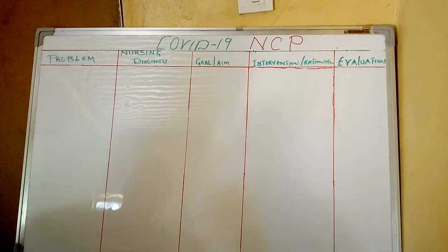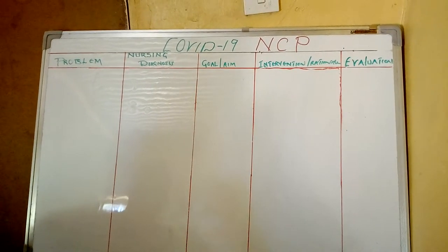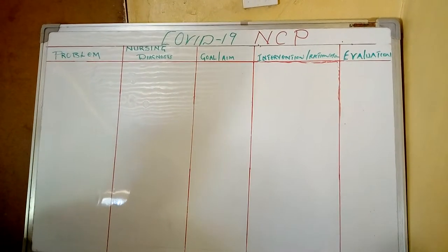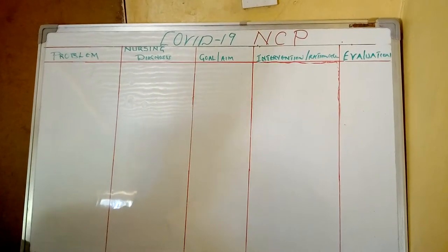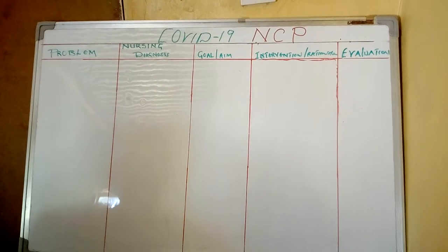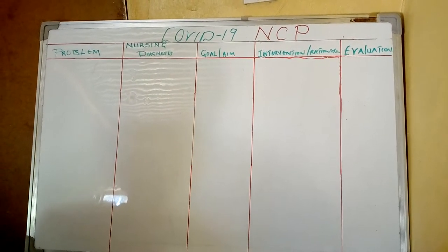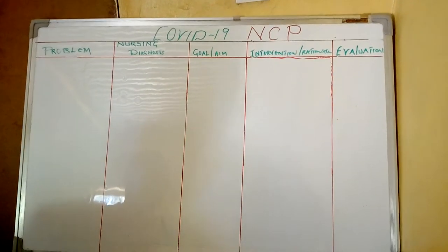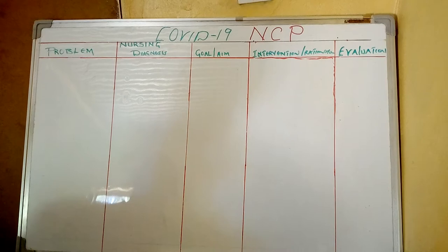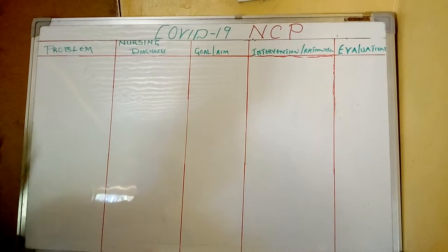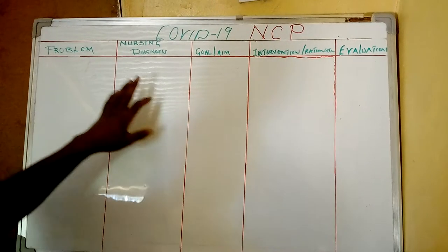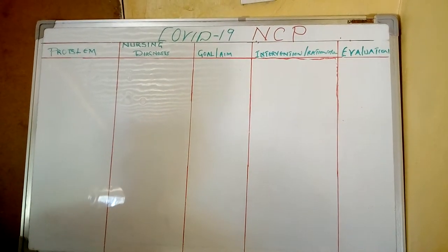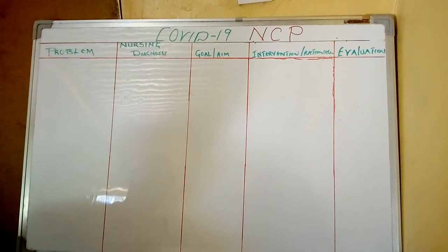What are some of the nursing care problems that the patient is going to present with? We look at the patient who has coronavirus and ask how can we nurse this patient using the nursing care plan? The nursing care plan has a problem, a nursing diagnosis, a goal or aim, an intervention, a rationale, and an evaluation.